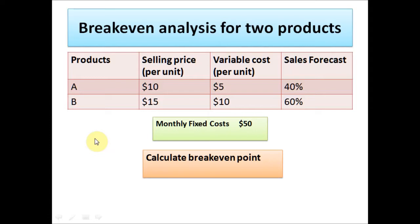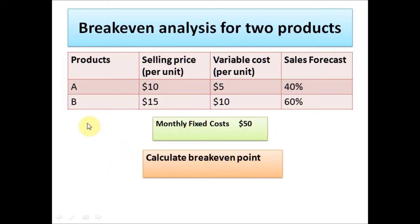So in this exercise, we have a company that produces and sells product A and product B. We have the selling price for both products, variable cost, and sales forecast for the products. The monthly fixed cost is $50. We need to calculate the breakeven point for the two products.